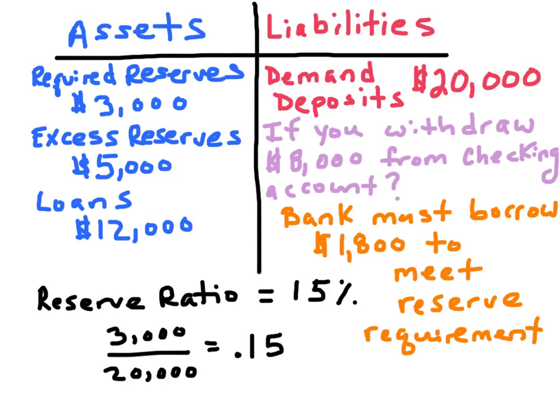But how does the bank meet its reserve requirement? If the demand deposits are now $12,000 because we subtracted the $8,000 from the liability side, it still has to keep 15% of $12,000. 15% of $12,000 is $1,800. So in order to meet the reserve requirement, this bank has to borrow money. Banks borrow money from one another through the federal funds interest rate, and sometimes banks borrow from the Federal Reserve at the discount rate.